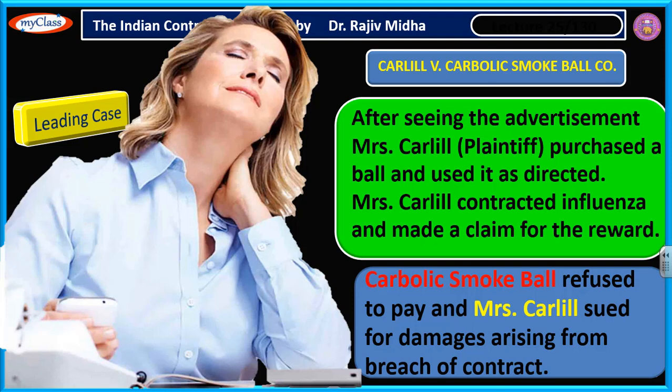Carbolic Smokeball Company refused to give Mrs. Carlyle the 200 pounds. Mrs. Carlyle filed a case against the company for breach of contract, stating that they had broken the contract they had made, and she should be paid damages — meaning monetary compensation.